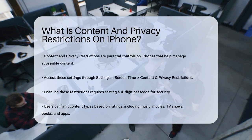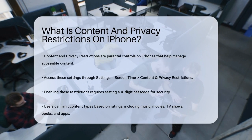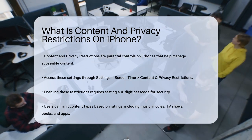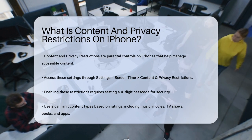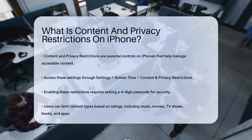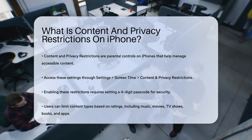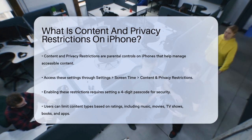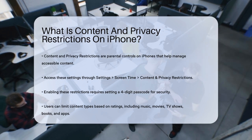Let's break down what content and privacy restrictions on iPhone are all about. Content and privacy restrictions are essentially parental controls that help you manage what content is accessible on your iPhone. You can find these settings by going to your iPhone's Settings, then tapping on Screen Time, and finally selecting Content and Privacy Restrictions.